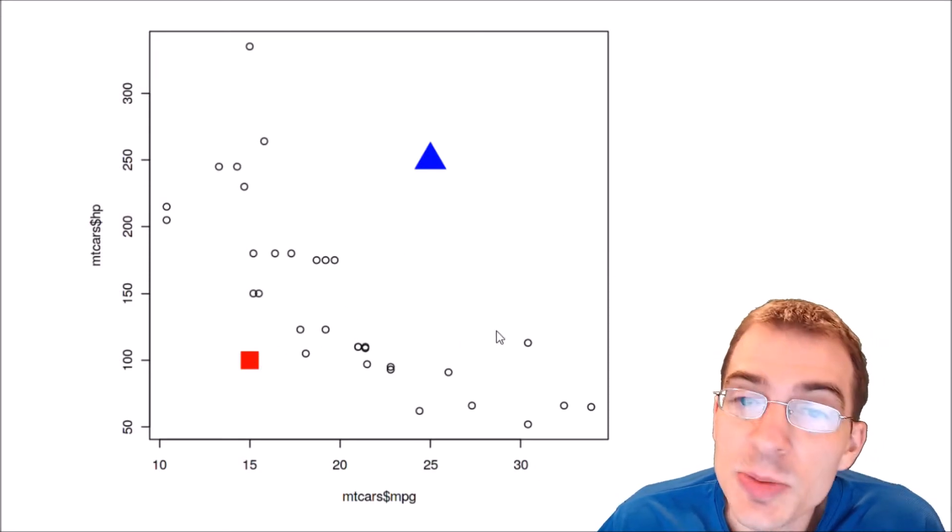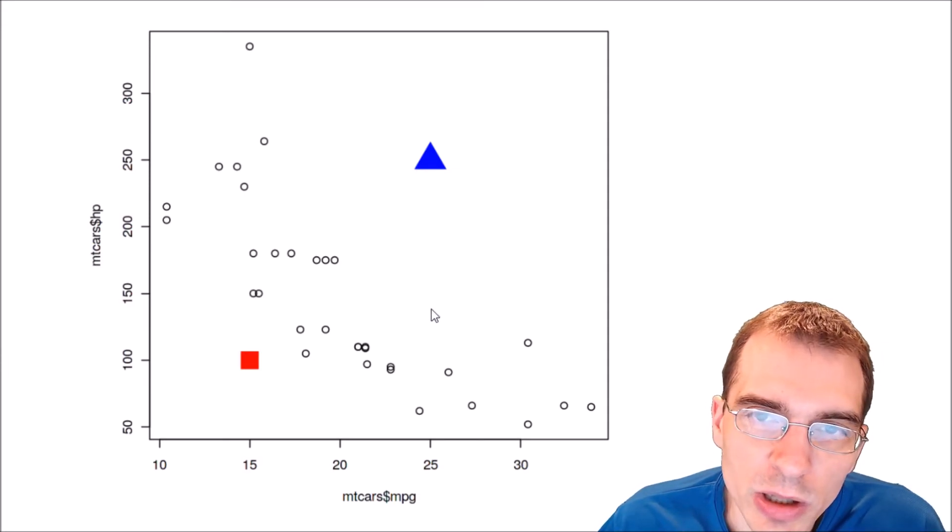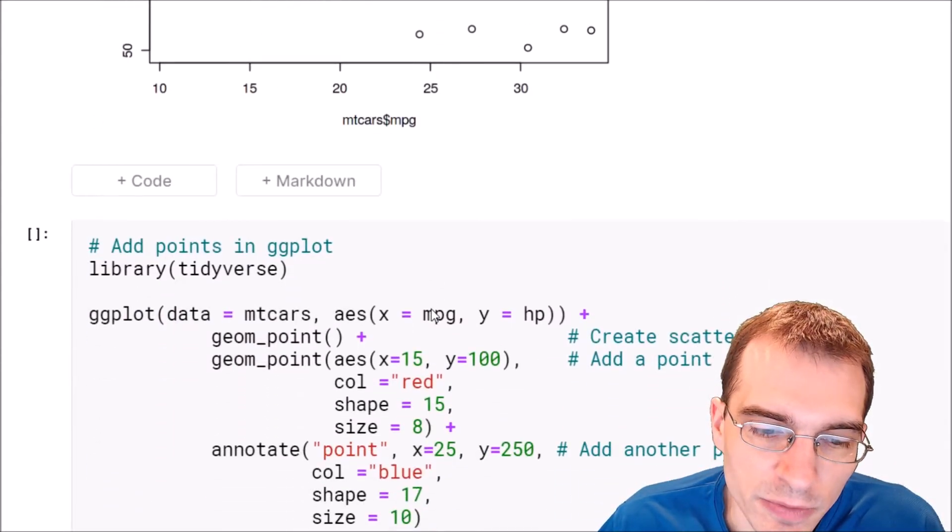With two points at these coordinates that we specified. Now we can do essentially the exact same thing using ggplot2 as well. It just requires a bit of different syntax.